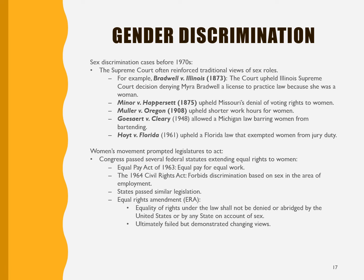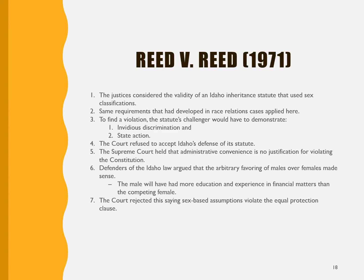However, we also see after this time an increase in the political power of women that began to push for equal pay for equal work and other civil rights, and we see the court start to revisit a lot of these earlier decisions. One of the earliest cases, Reed versus Reed in 1971, was a case on whether Idaho would be able to give preference in inheritance to male relatives. To find a violation, the challenger would have to demonstrate what was called invidious discrimination and that it was state actors who did so.